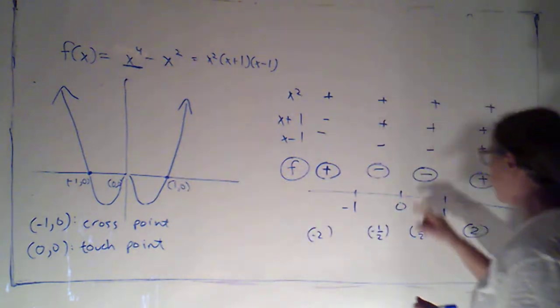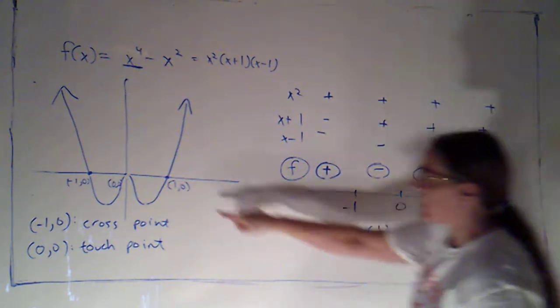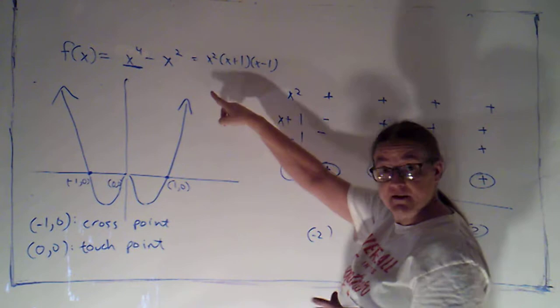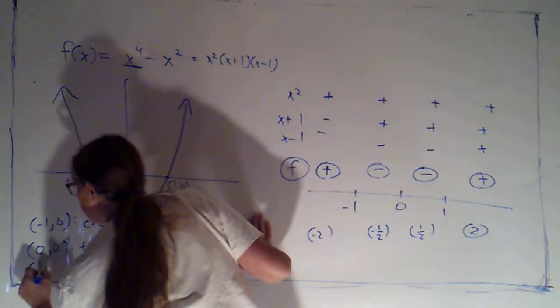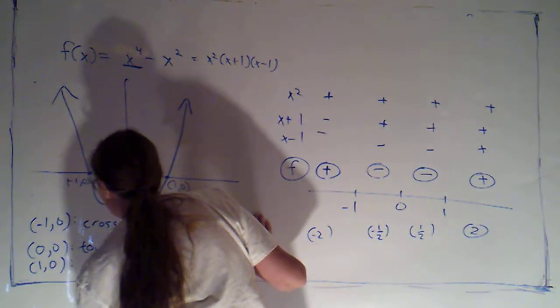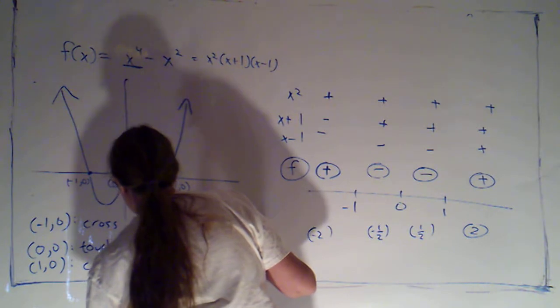And then, at 1, 0, again, the function changed sign, and that's reflected in the graph crossing the x-axis. So, we'll say that 1, 0 is also a cross point.